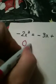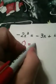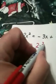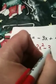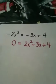So this is going to become a 0. And on this side I'm going to have 2x squared. And of course the minus 3x and the plus 4 don't change because there's been no moving of those.